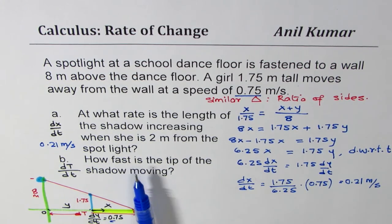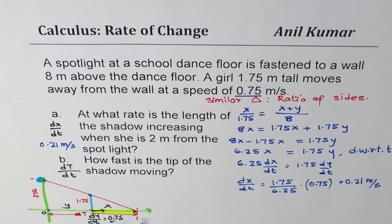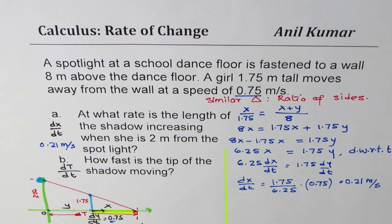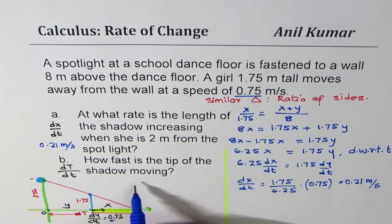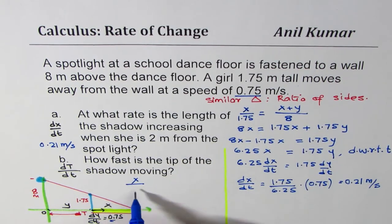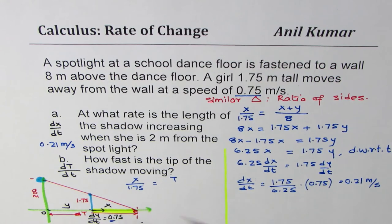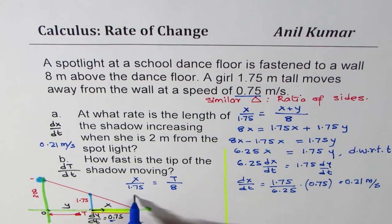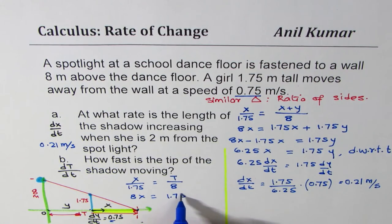Now we find how fast the tip of the shadow is moving. We use the same triangle. The smaller triangle gives X over 1.75 equals T over 8, where T is the total distance from the wall to the tip. Cross multiplying: 8X equals 1.75T. Taking the derivative: 8 times dx/dt equals 1.75 times dT/dt.